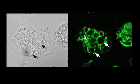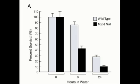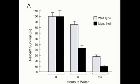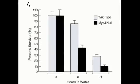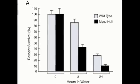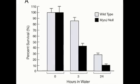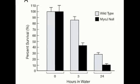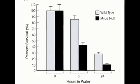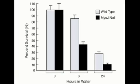The team then generated dictyostelium that lacked myo-J. The first thing you want to know is, if you get rid of this myosin, does this membrane compartment care? Is there any obvious physiological consequence of deleting this motor from the cell? If you take the null cells and challenge them with water — the most challenging hypo-osmotic media you can put them in — and test how well they survive, they clearly do much worse than wild-type cells.